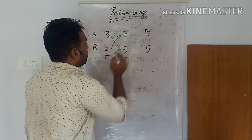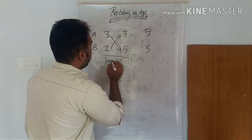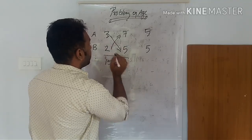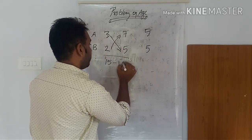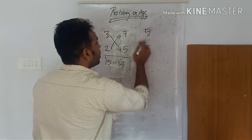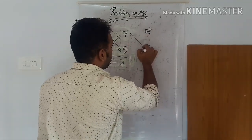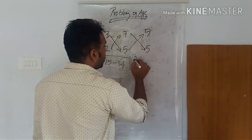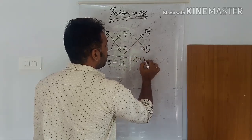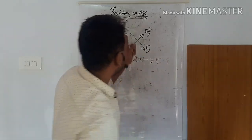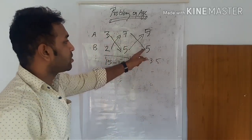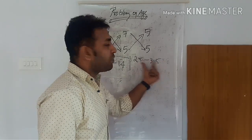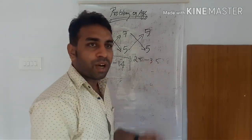This is 3 into 5, which is 15. Minus 7 into 2 — 7 into 2 is the first part. Then 5 into 5 is 25, and 7 into 5 is 35. This is the cross-multiplication, noting the difference between the minus terms.